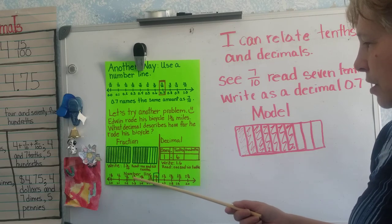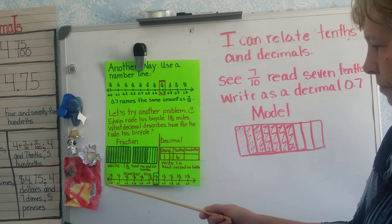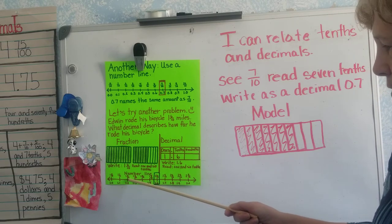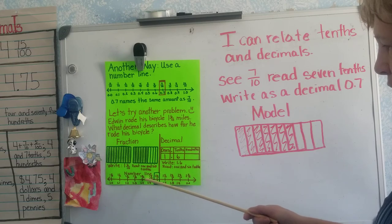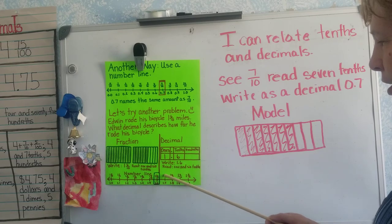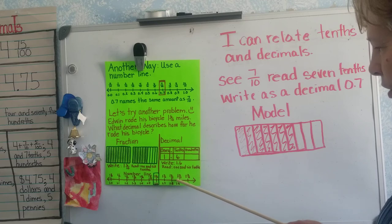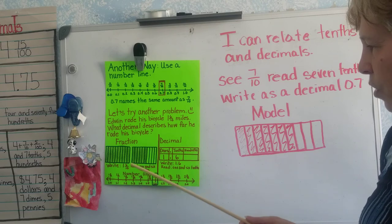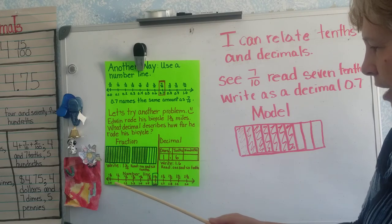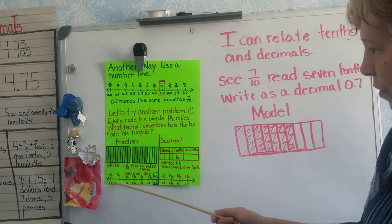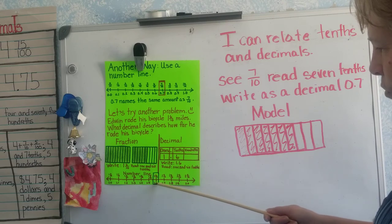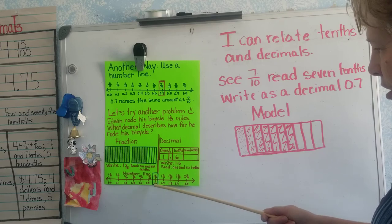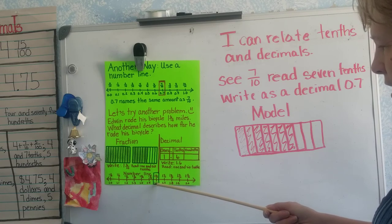We can also show this on a number line, starting at one. We can show one and zero tenths, one and one tenth, one and two tenths, one and three tenths, one and four tenths, one and five tenths, one and six tenths, one and seven tenths, one and eight tenths, one and nine tenths, and two and zero tenths. We look for the fractions at the bottom and we can see 1.6. So one and six tenths as a fraction is equal to one and six tenths as a decimal.